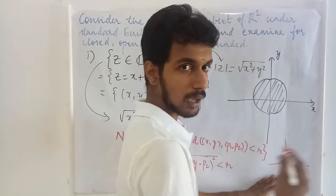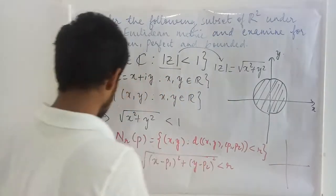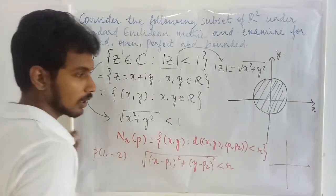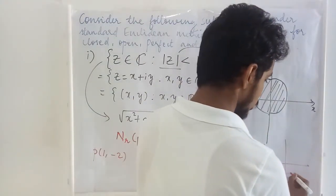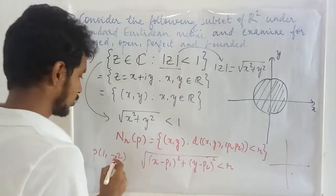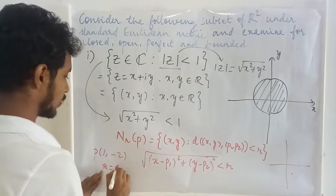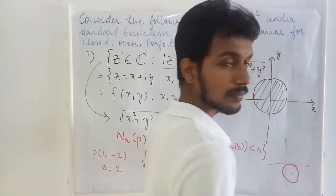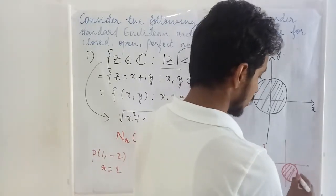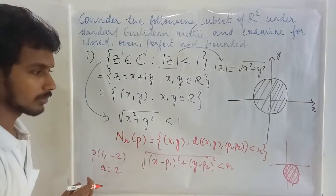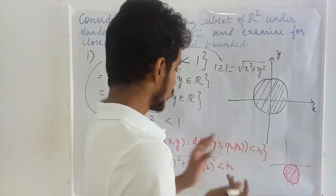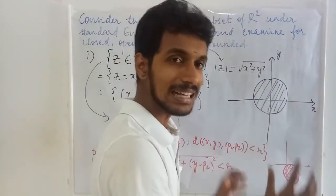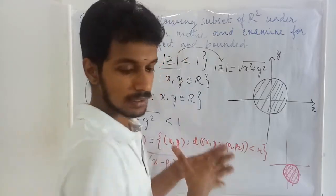Suppose (P₁, P₂) is something like (1, -2). Here it is going to be 1 on one axis and -2 on the other, so this is going to be our center. Suppose R is equal to 2 — we will have a circle of that size. Only the interior points of this circle are going to be the neighborhood. So whatever may be the radius and whatever may be the center, it is going to be a circle, and only the interior of the circle is the neighborhood in this case.